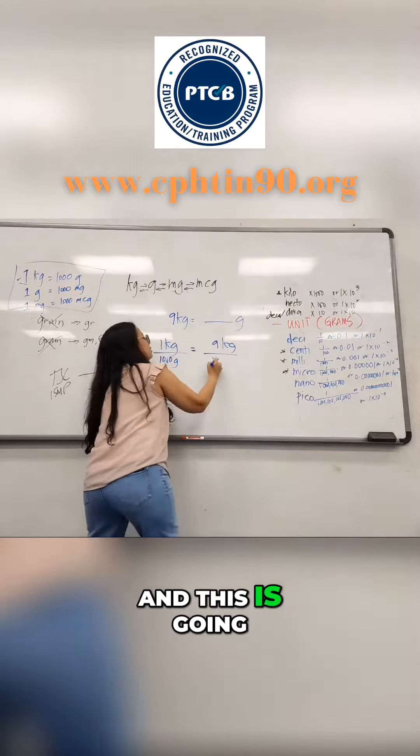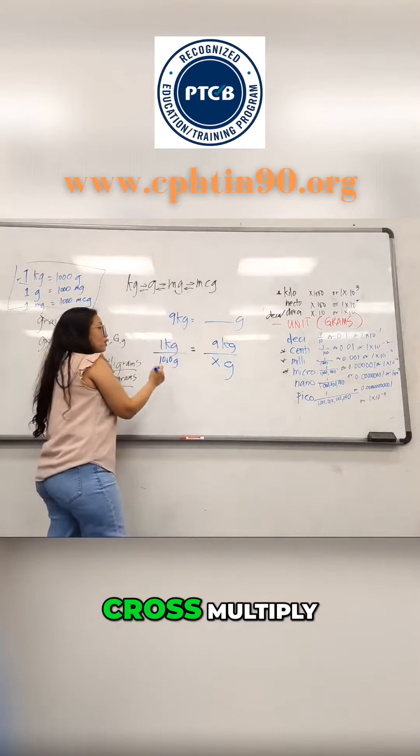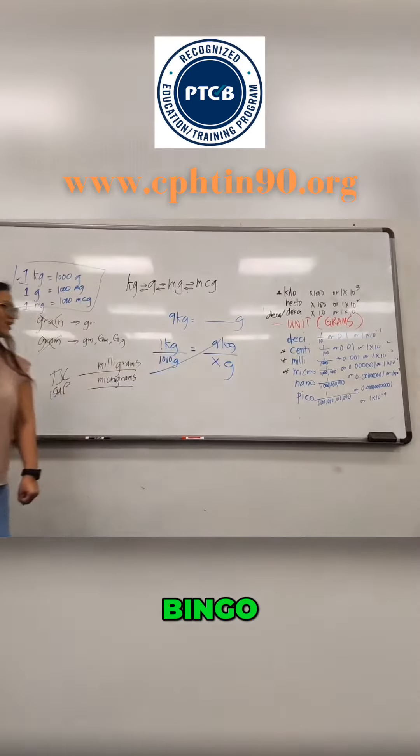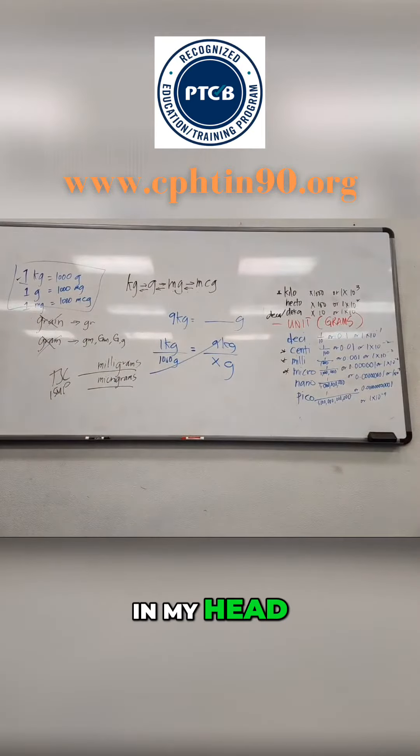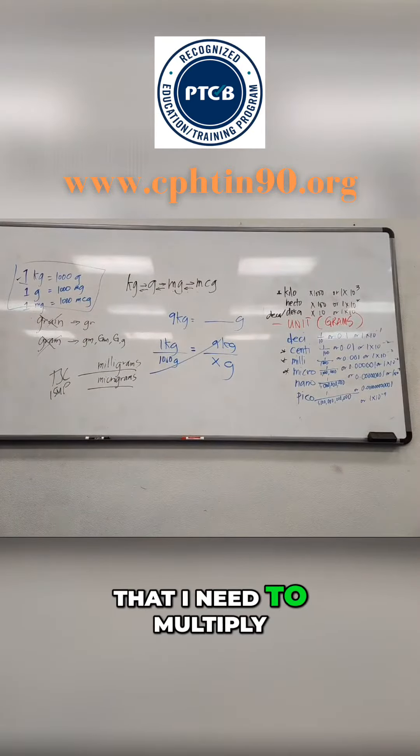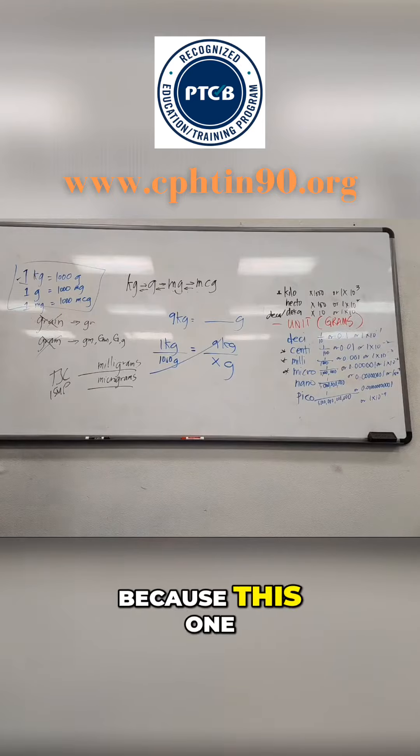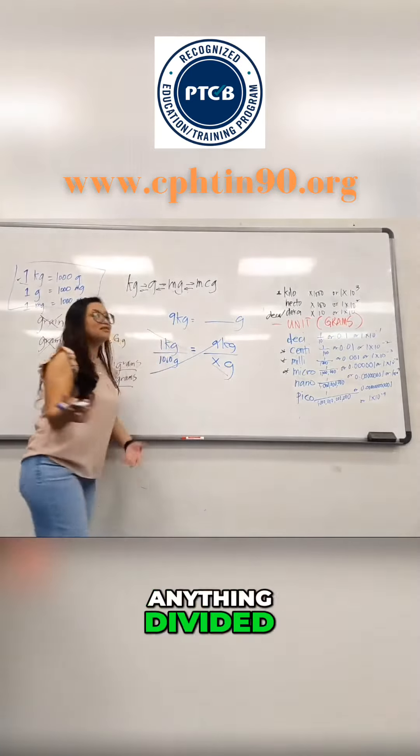What's next? Cross multiply. Very bingo! I was right in my head, right, that I need to multiply because this one would go one X. Anything divided by one would be itself.